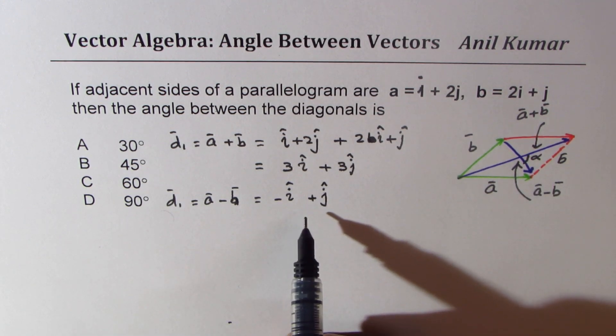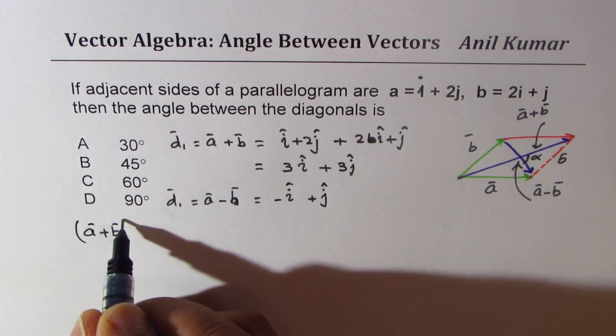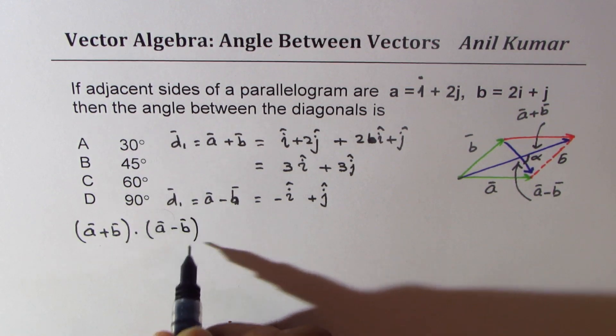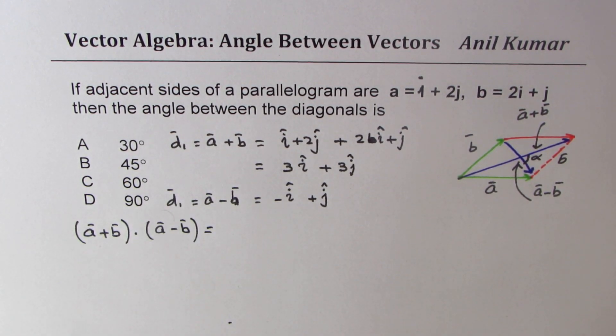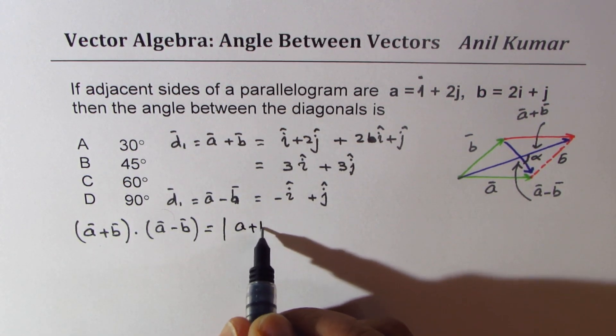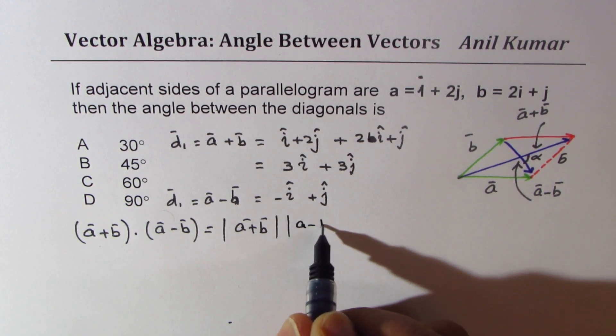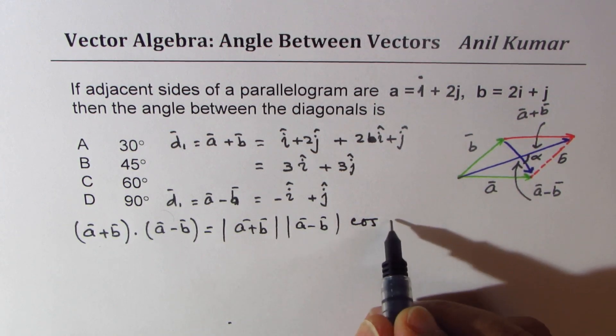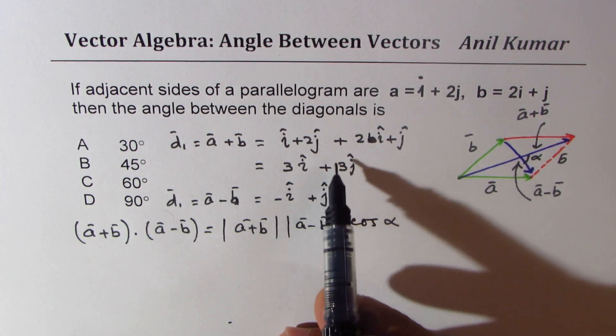To find the angle between these two diagonals, we have to find the dot product. So basically we are doing (a + b) · (a - b). Now these are the two diagonals. So that will give us magnitude of a + b times magnitude of a - b times cos of angle between them, which we are calling alpha.